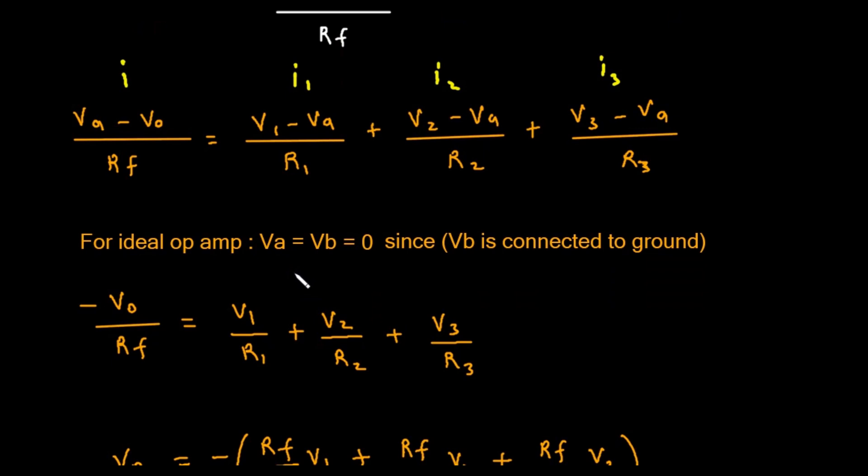Golden rule number two: the op-amp will do whatever it takes with its output voltage, Vo, to make the voltages at its two inputs equal to each other. This second rule is the key to everything.